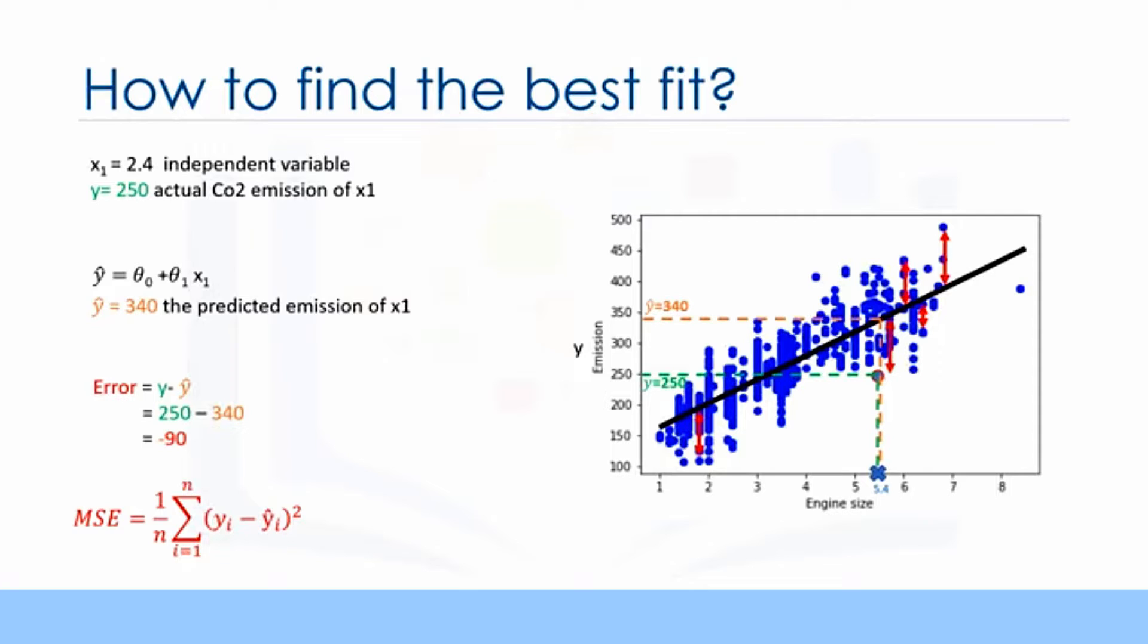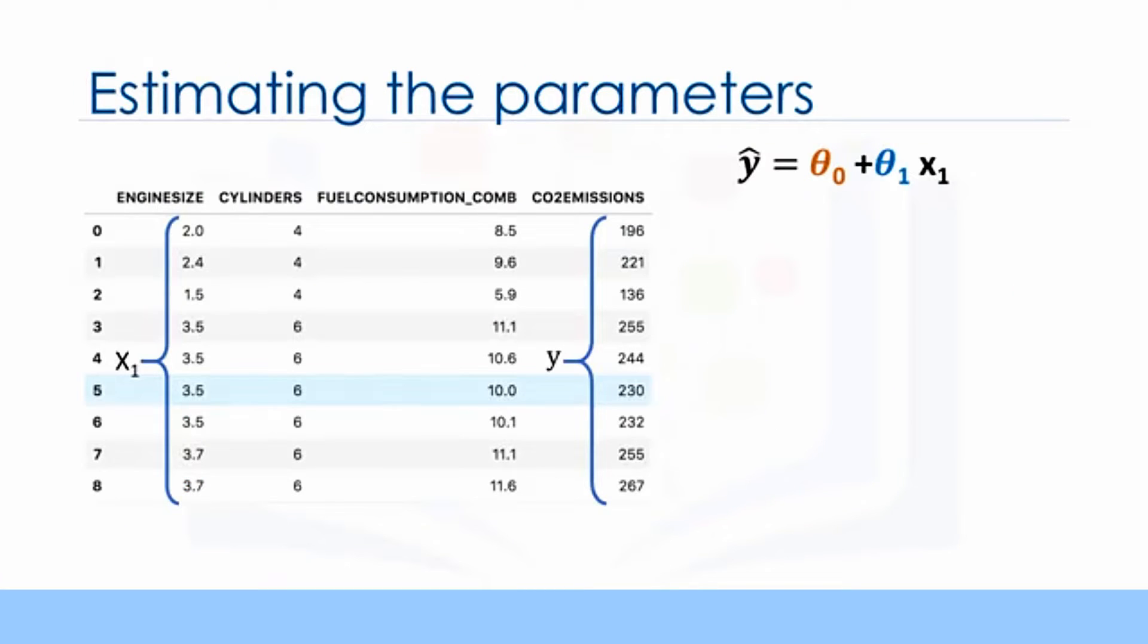Actually, we have two options here. Option 1, we can use a mathematic approach. Or, option 2, we can use an optimization approach. Let's see how we can easily use a mathematic formula to find the theta 0 and theta 1. As mentioned before, theta 0 and theta 1 in the simple linear regression are the coefficients of the fit line. We can use a simple equation to estimate these coefficients.